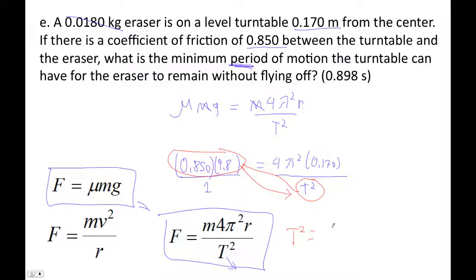T² equals 4π² times 0.17 over 0.85 times 9.8. So here I am, ready to type it in.